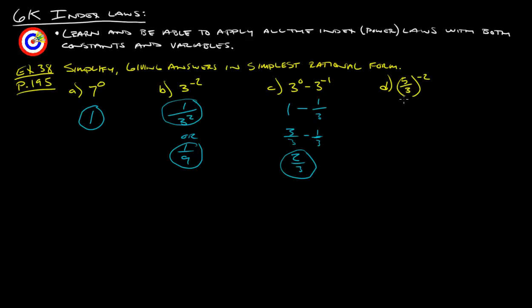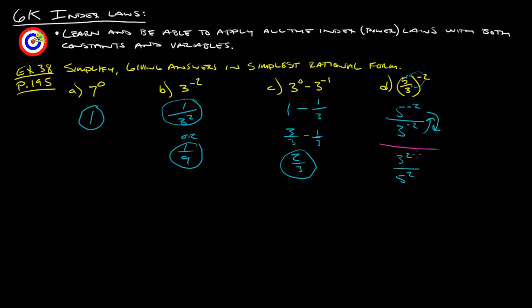For (5/3) to the negative 2nd: distribute the negative 2 to both numerator and denominator — 5 to the 1 times negative 2 is negative 2, and 3 to the 1 times negative 2 is negative 2. Since the 5 has a negative exponent, move it to the denominator as 5 squared; since the 3 has a negative exponent, move it to the numerator as 3 squared. So the result is 3 squared over 5 squared, or 9 over 25. Either form is acceptable.